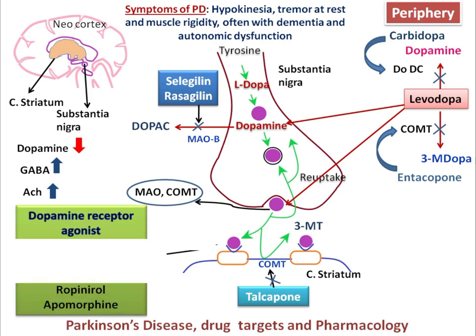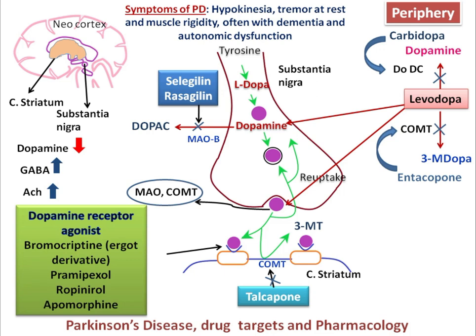Another major class of drugs used in Parkinson's disease is dopamine receptor agonists, which mainly target D1 and D2 receptors. The first drug in this class is bromocriptine, an ergot derivative from plant sources, but it has limitations. Other non-ergot dopamine receptor agonists available are pramipexole, ropinirole, and apomorphine, which are also considered dopamine receptor agonist drugs.